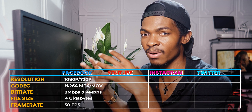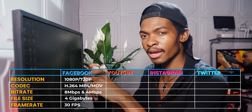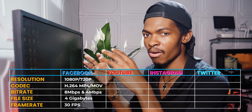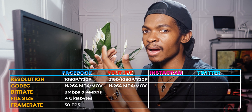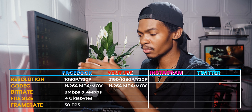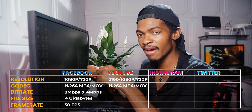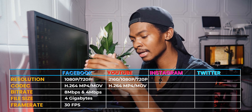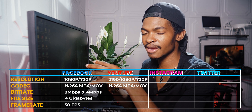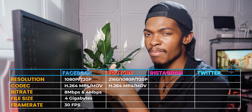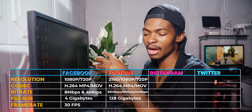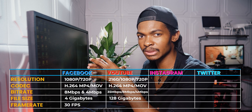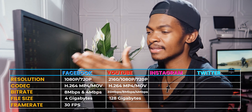For YouTube, the highest recommended settings are: resolution — 4K, 1080p HD, or 720p; codec — H.264 with MP4 or MOV file format; bitrate — 35 megabytes per second for 4K, 8 megabytes per second for 1080p, and 4 megabytes per second for 720p; file size maximum — 128 gigabytes; frame rate — anywhere from 24 to 60 frames per second.